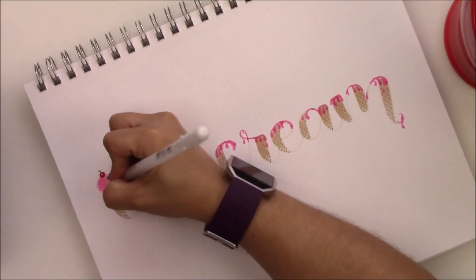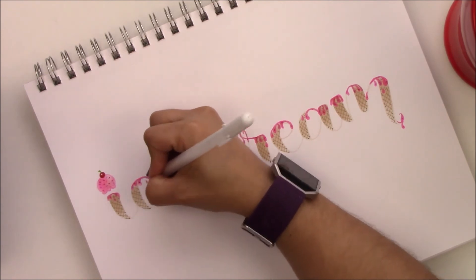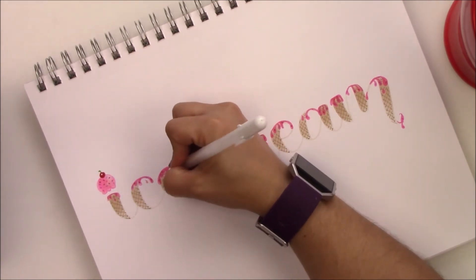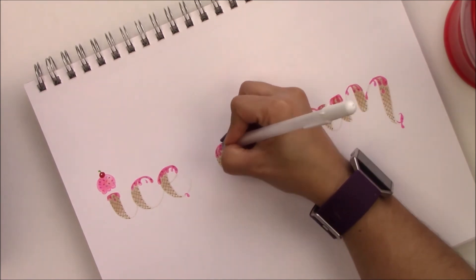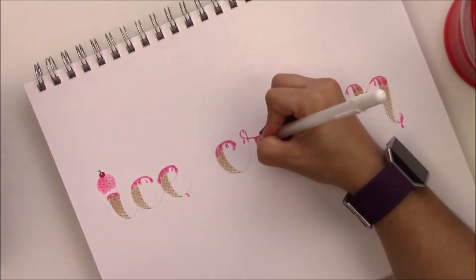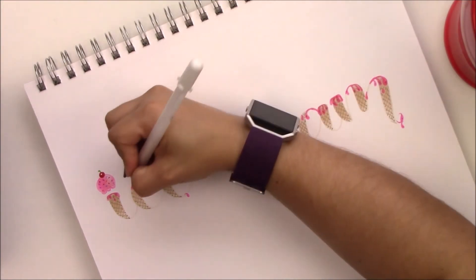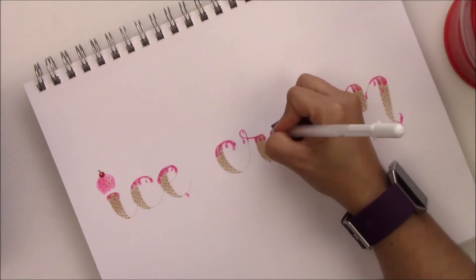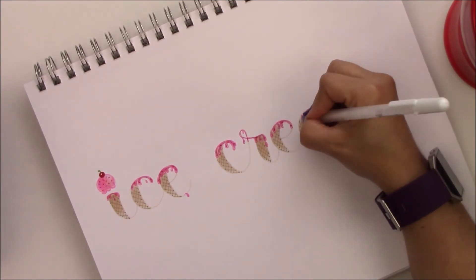Then I used a white gel pen to draw a few accents and details to these drippings in the melted ice cream. This is really simple to do. It looks like it's a lot of work but it's really not.